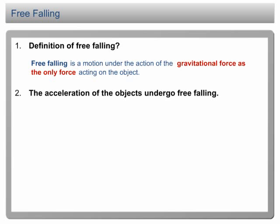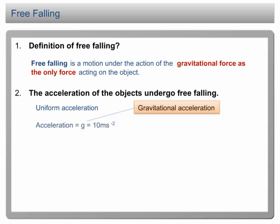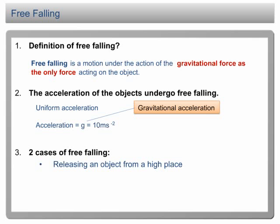Second, you need to note the acceleration of objects undergoing free falling. An object undergoing free falling will move at a uniform acceleration. The acceleration is equal to the gravitational acceleration, which is 10 meters per second per second. Third, you need to know the two cases of free falling: dropping an object from a high place and launching an object vertically upward. We are going to discuss this in the coming slides.